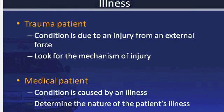During the scene size-up, try to determine the nature of the patient's problem. A trauma patient is one who has experienced an injury from an external force. In trauma situations, look for the mechanism of injury — what caused that injury. A medical patient is one whose condition is caused by an illness. In medical situations, try to determine the nature of the patient's illness. So we look for an MOI or an NOI: Mechanism of Injury or Nature of Illness.